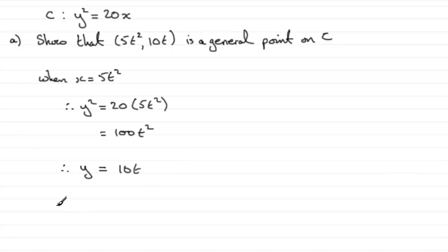So therefore we've got that 5t squared, 10t is a general point on C. And that would be my conclusion. All right?